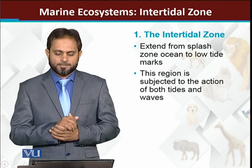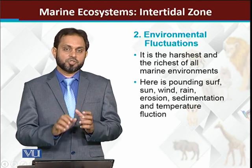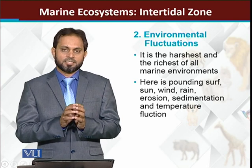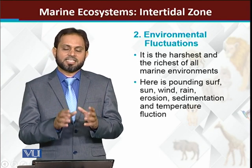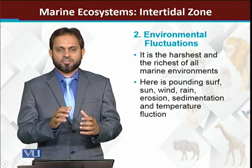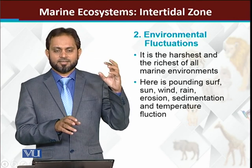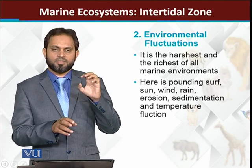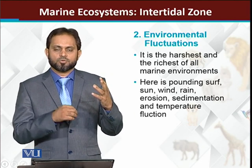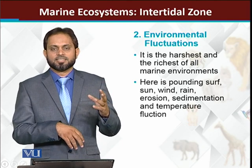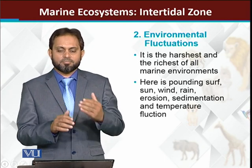If we talk about environmental fluctuation, this is the harshest aquatic environment. It is harsh because the impact of the terrestrial environment is directly felt here. For example, if the temperature is very high during the daytime, the water here will ultimately become warm. Similarly, water is not constant here — water is coming and going back; water availability is not there all the time.